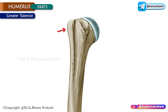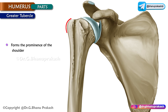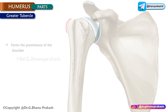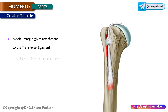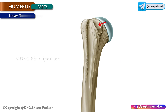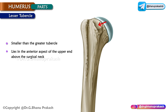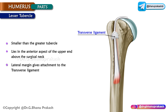The greater tubercle lies in the posterolateral aspect of the upper end and forms the prominence of the shoulder. Its medial margin gives attachment to the transverse ligament. The lesser tubercle is smaller than the greater tubercle and lies in the anterior aspect of the upper end just above the surgical neck. Its lateral margin gives attachment to the transverse ligament.